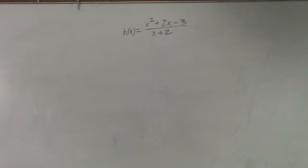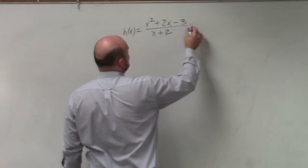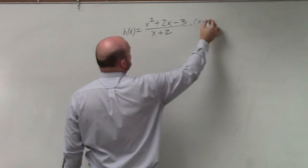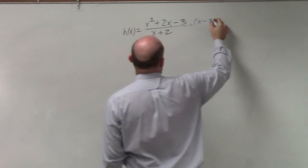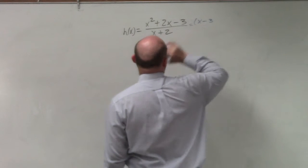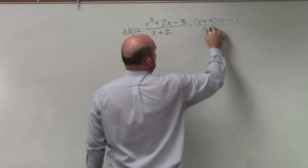So in this problem, the first thing I'm going to do is try to factor this. By factoring, I can see that this factors down to (x + 3)(x - 1) over x + 2.